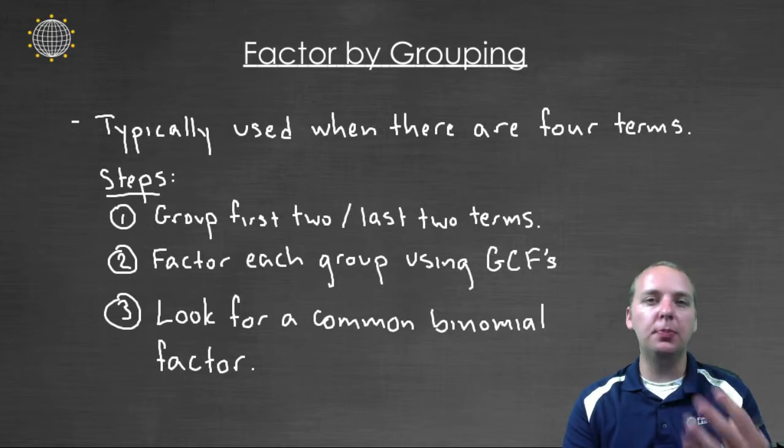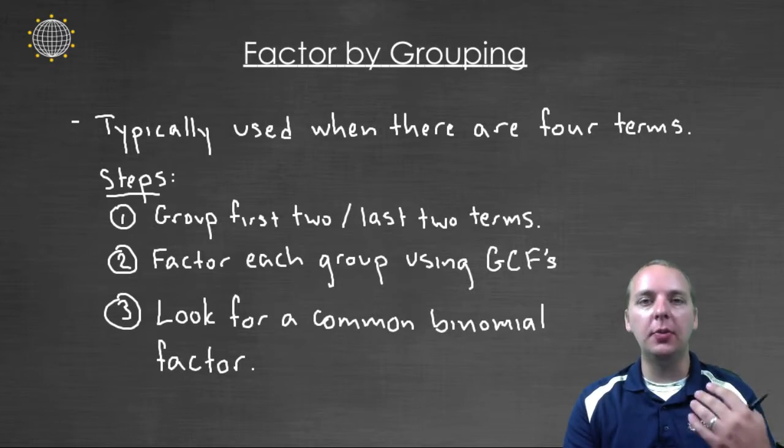These can usually be pretty easy to spot because you see a polynomial that has four terms, then you're asked to factor it. The first thing you should think would be factor by grouping. You should at least try this technique.